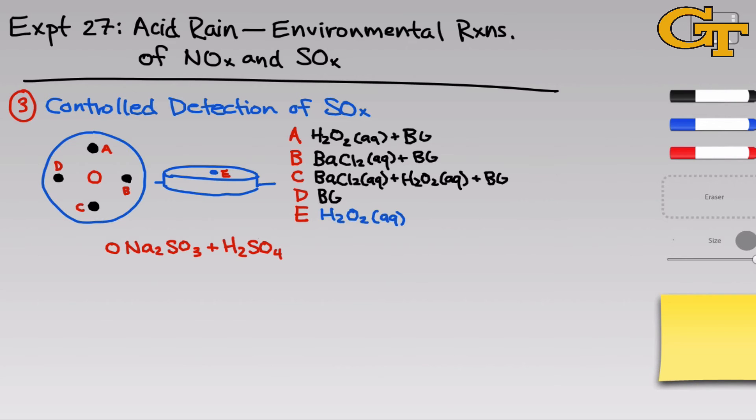Keep in mind here that although we're generating SO2 in the central drop, the hydrogen peroxide in drops A and E serves to oxidize this to SO3. SO3 can in turn be further oxidized to sulfate, SO4 2-.